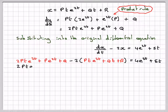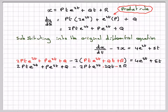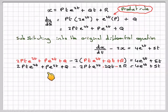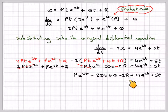Expanding the bracket, we're going to get minus 2pt e to the 2t minus 2qt minus 2r on the right-hand side. We see that the 2pt e to the 2t terms cancel out, and we're left with p e to the 2t minus 2qt plus q minus 2r is equal to the right-hand side.